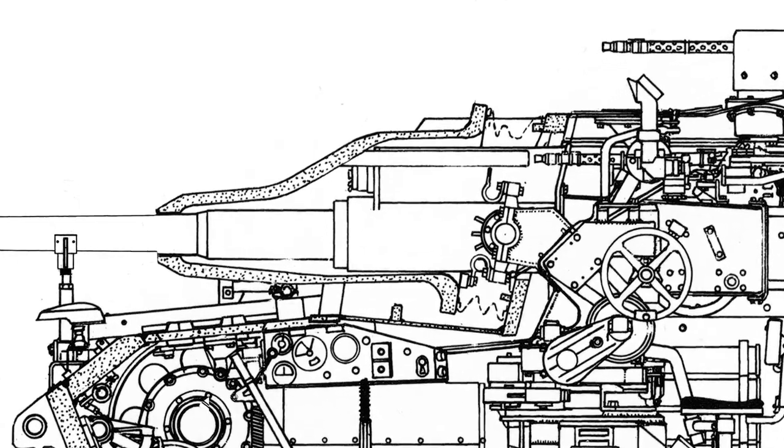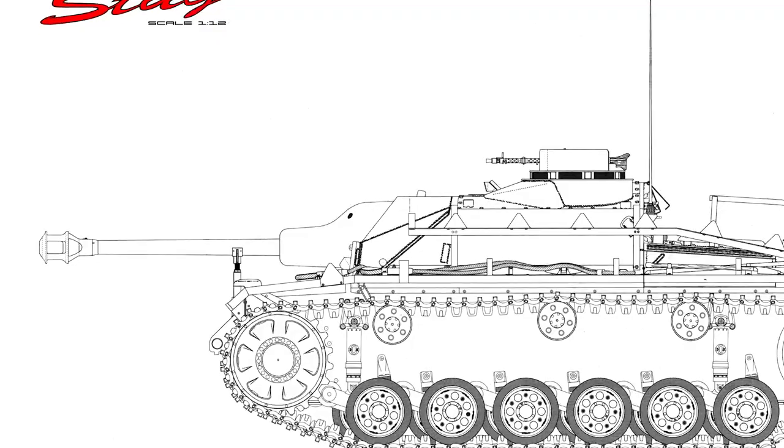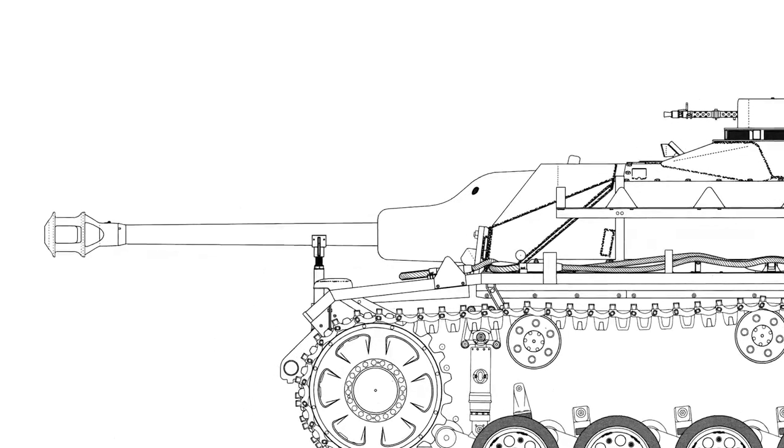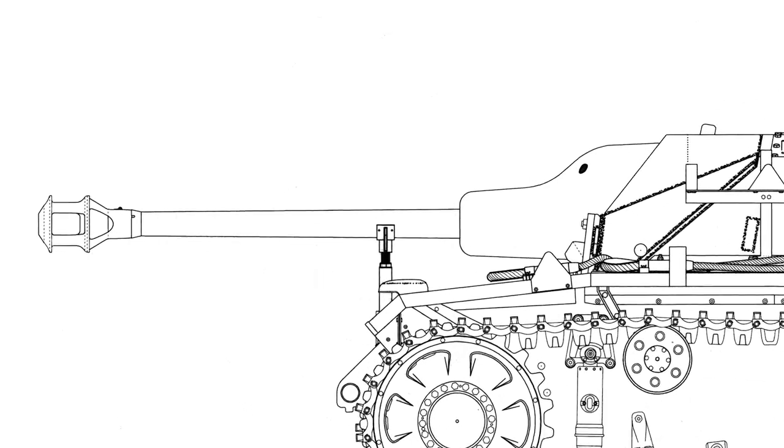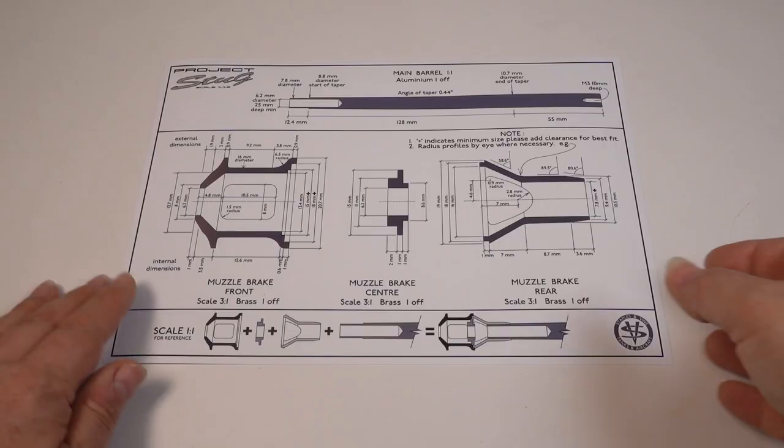Before I committed to starting Project Stug, I made sure I had a route to resolve any of the major problems with this project. One of these was creating the muzzle brake and barrel. I wanted to get these parts turned in aluminium and brass, so I prepared a set of drawings for the parts in my design software.